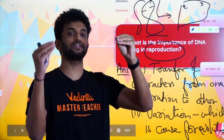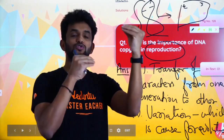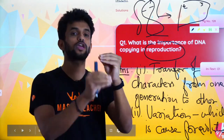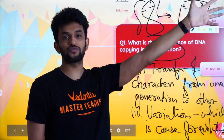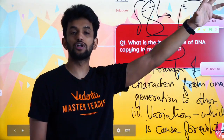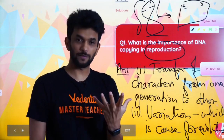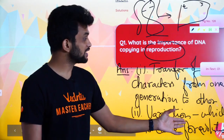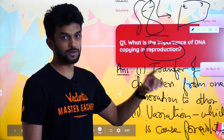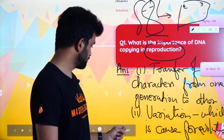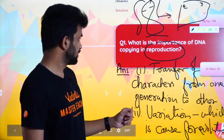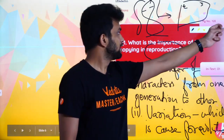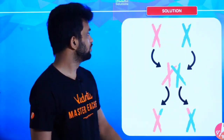This variation is the cause for evolution. Little by little, variations accumulate, and over millions of years it will lead to the creation of a new organism — a new species.